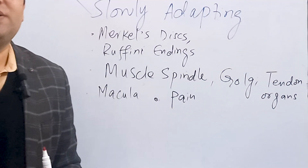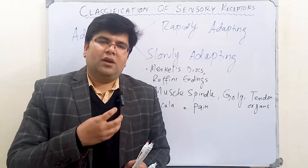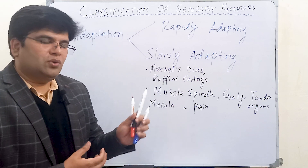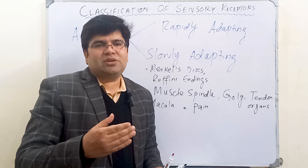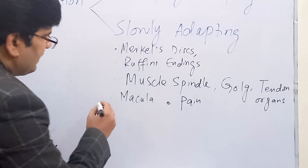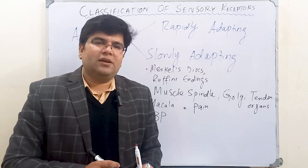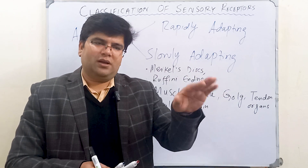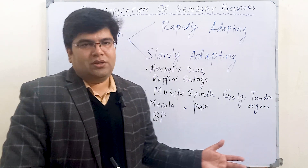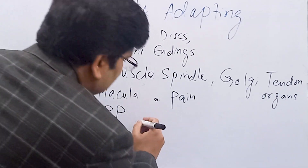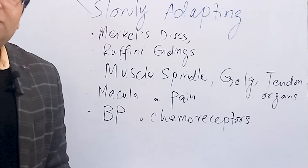Nociceptors are also slowly adapting receptors. Pain receptors should not adapt, because if they did, a damaging stimulus would keep harming the tissue without us being aware. These pain receptors continuously inform the brain as long as the damaging stimulus is present, so we can seek clinical advice. Baroreceptors in the arch of the aorta and carotid sinus are also slowly adapting — they keep blood pressure from fluctuating, and only adapt to a new pressure level perhaps after two days. Chemoreceptors detecting oxygen, carbon dioxide, and hydrogen ions are also slowly adapting.